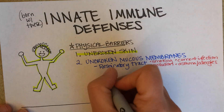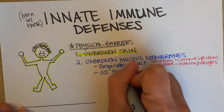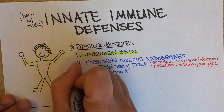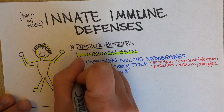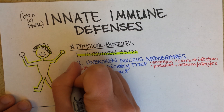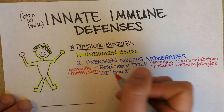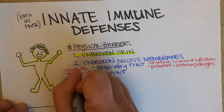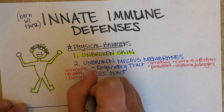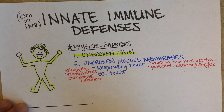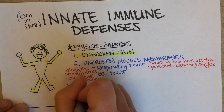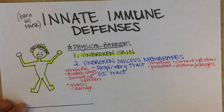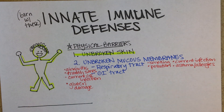Then there's the GI tract — the gastrointestinal tract. That can be broken by, for example, gingivitis or sores in the mouth like canker sores. Further down, a current GI infection damages the intestinal lining, similar to respiratory infections, making a secondary bacterial infection more likely. Gluten is also an irritant to most people's GI tract, and because it irritates the lining, it can set the stage for a bacterial infection.